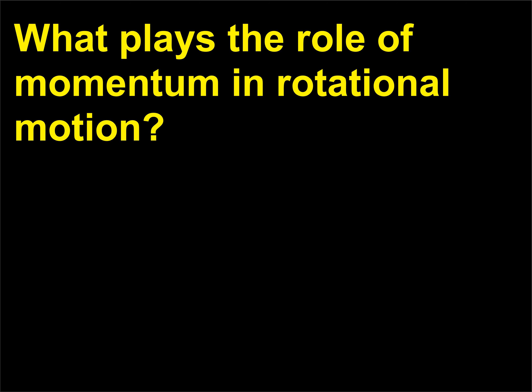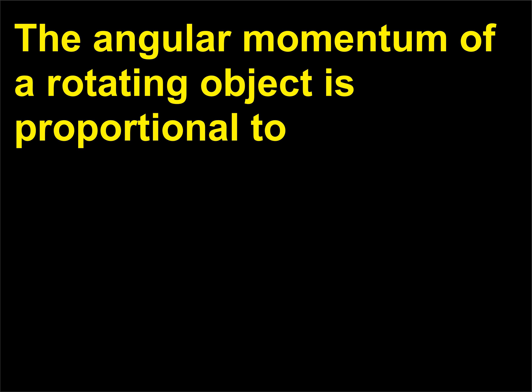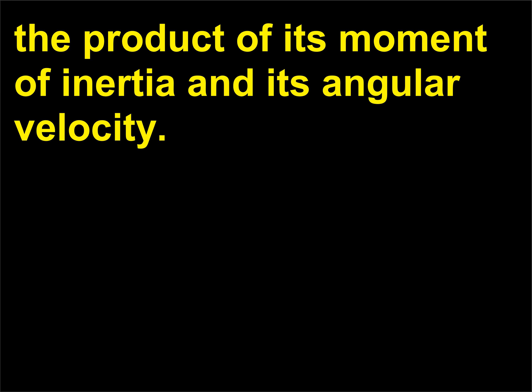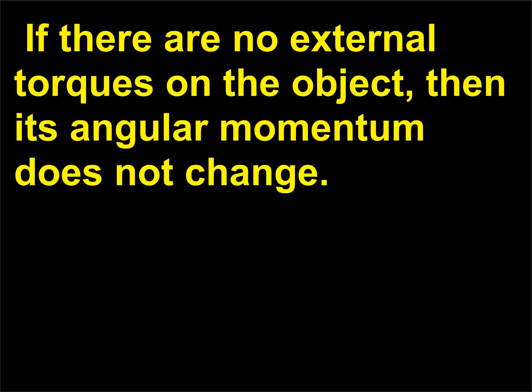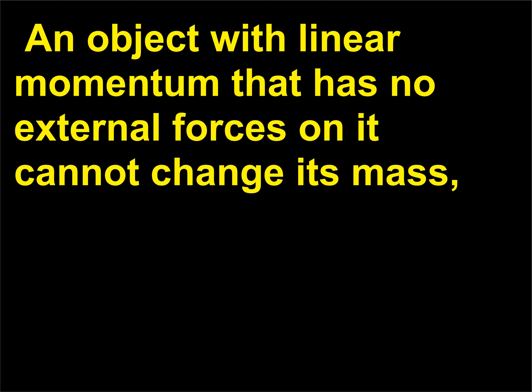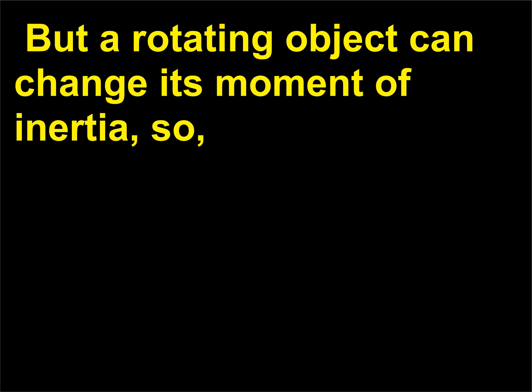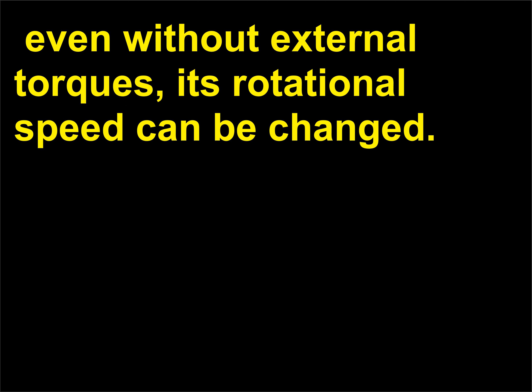What plays the role of momentum in rotational motion? The angular momentum of a rotating object is proportional to the product of its moment of inertia and its angular velocity. If there are no external torques on the object, then its angular momentum does not change. An object with linear momentum that has no external forces cannot change its mass, so its velocity is constant. But a rotating object can change its moment of inertia, so even without external torques its rotational speed can be changed.